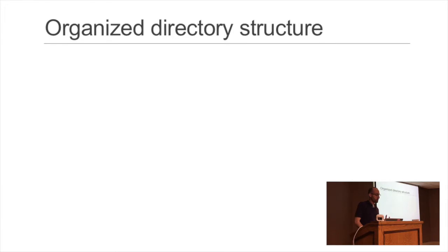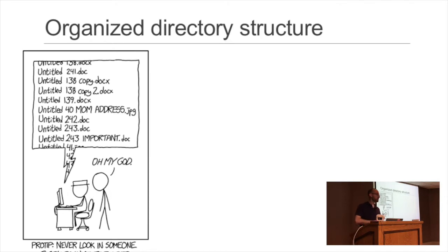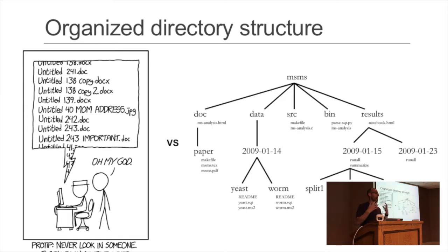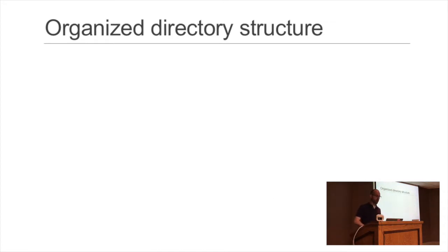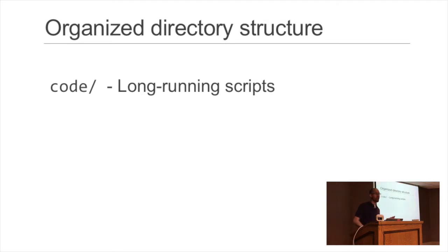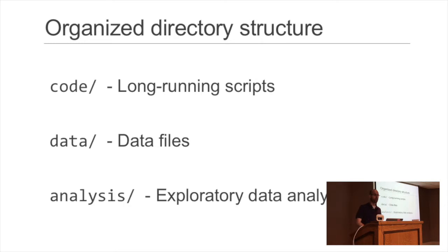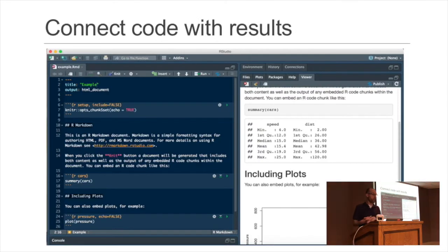I took the R Markdown documentation website as a template and added an organized directory structure, because with multiple people saving files randomly in one big directory it would quickly get unmanageable. I implemented a scheme where 'code' held long-running scripts for our HPC cluster, 'data' held the raw data files, and 'analysis' had the exploratory data analysis files — in our case, R Markdown files, which are a great system for literate programming, connecting code, results, and output.